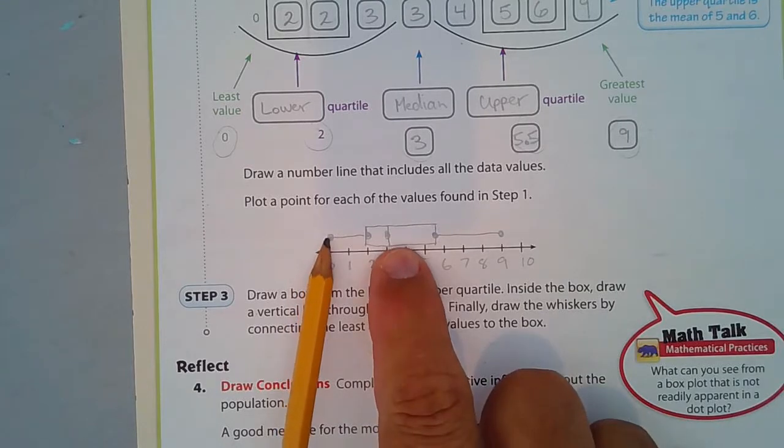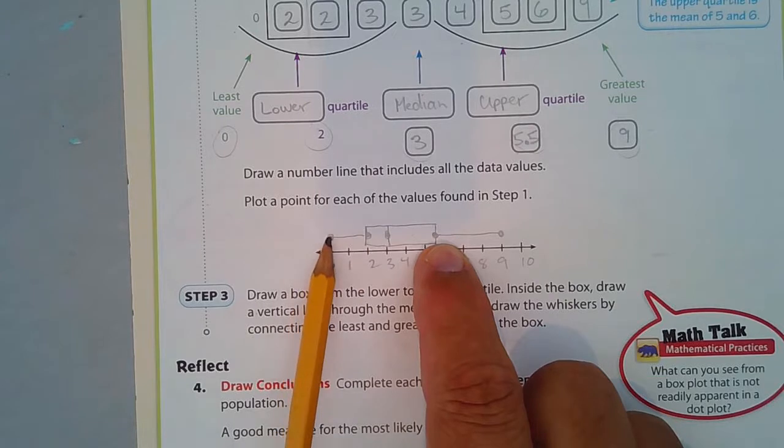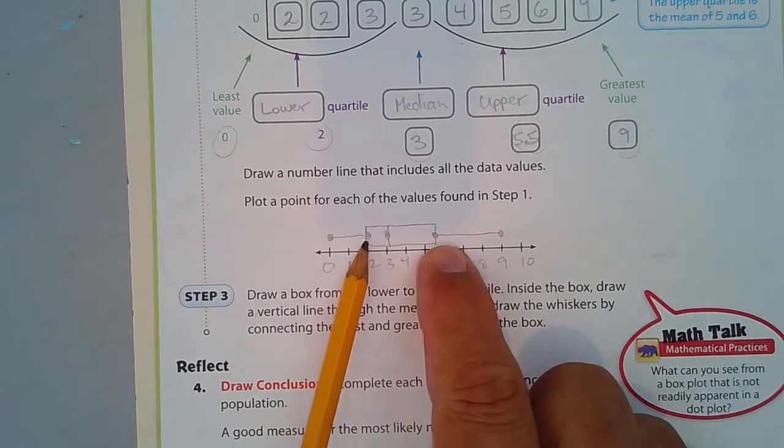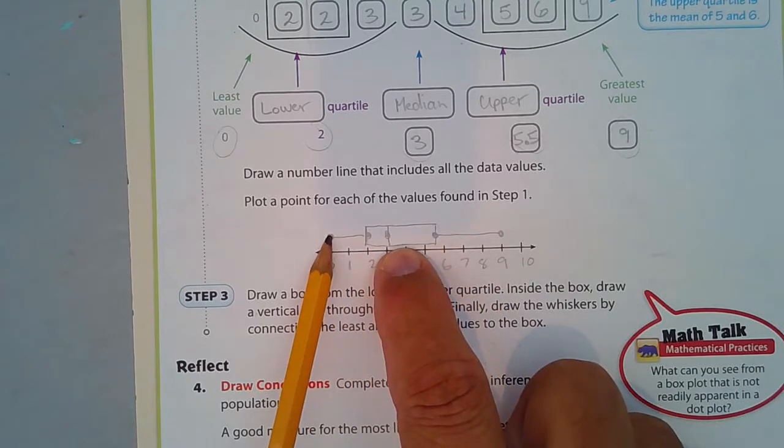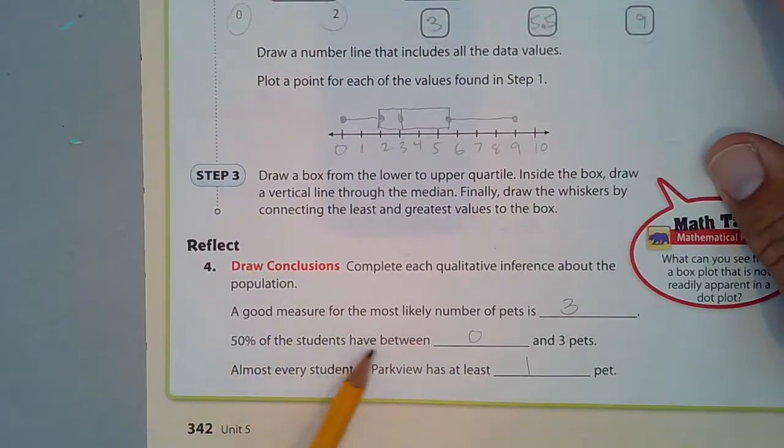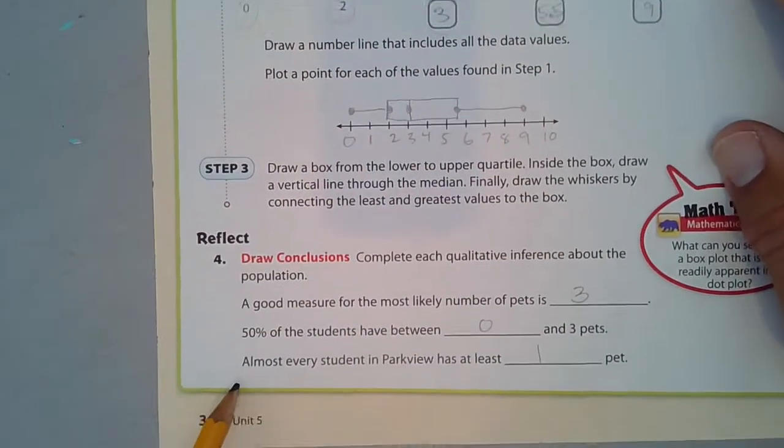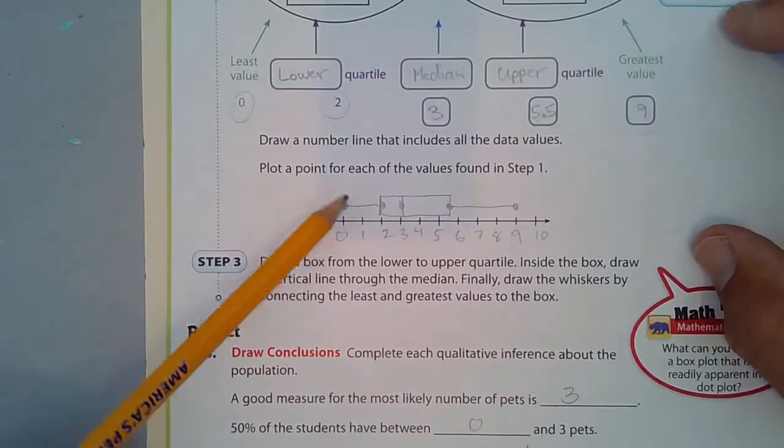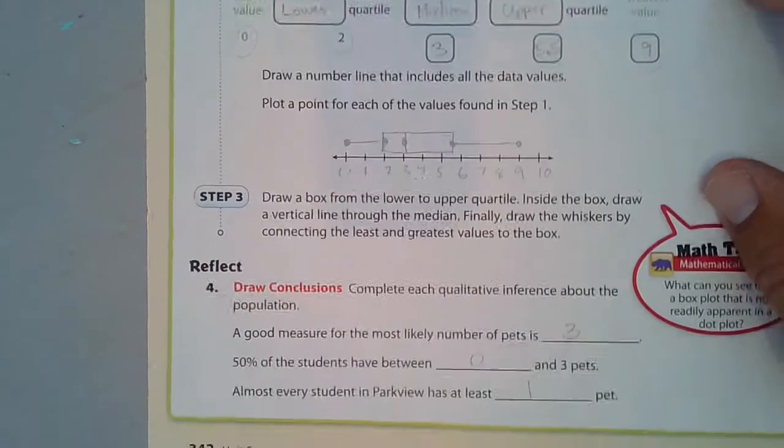Here, this is the median. This is the lower quartile, so the bottom 25%. This is 25% of the data, 50%, 75%, and then from here to here is 100%. Inside the box always represents 50%, because this goes from zero to 25, 50, 75, and 100. This is the middle 50%. This is the bottom 50%. This is the top 50%. So, 50% of the students are between zero and three. That is correct. Almost every student in Parkview has at least one pet. They almost always have at least one pet.